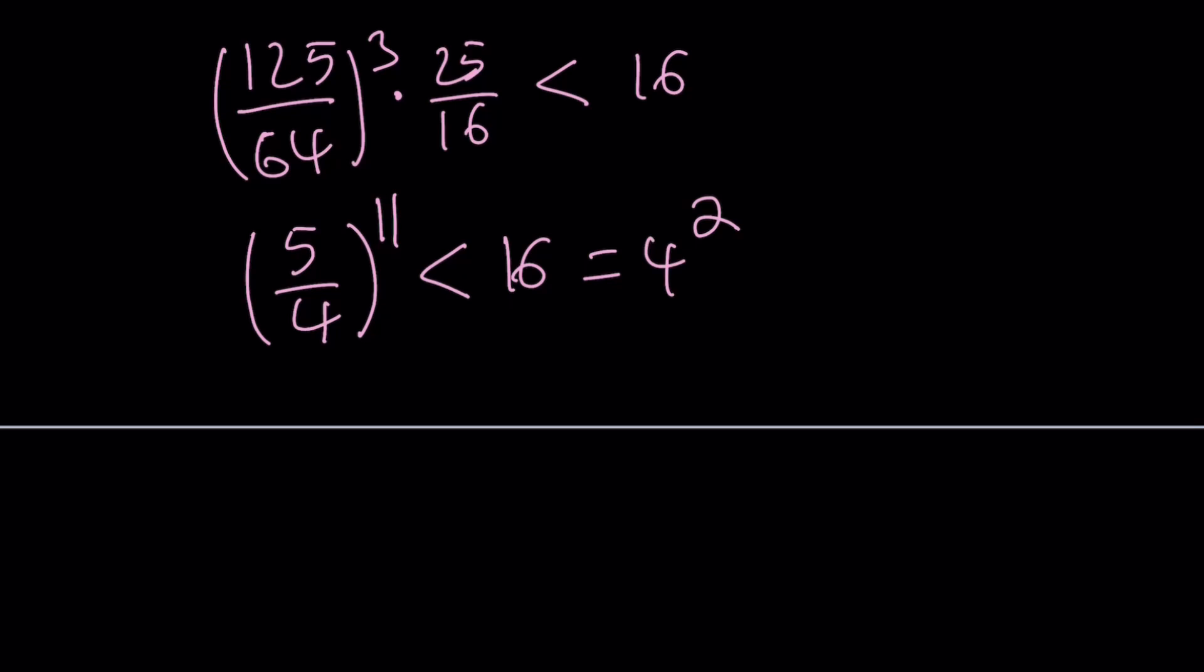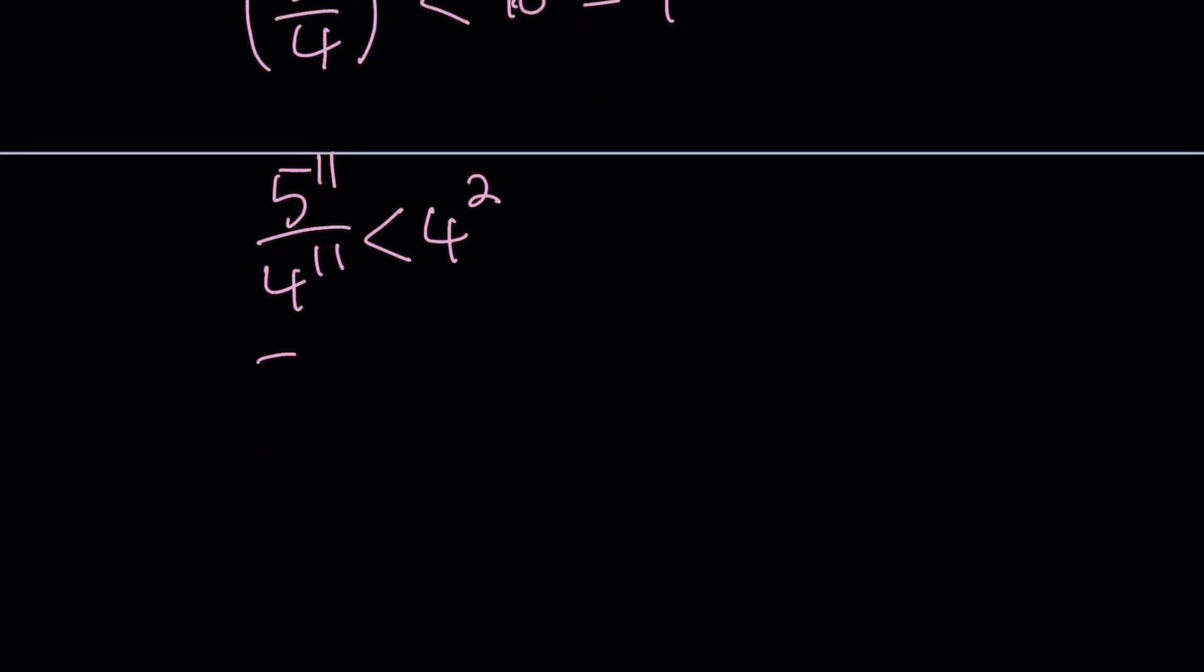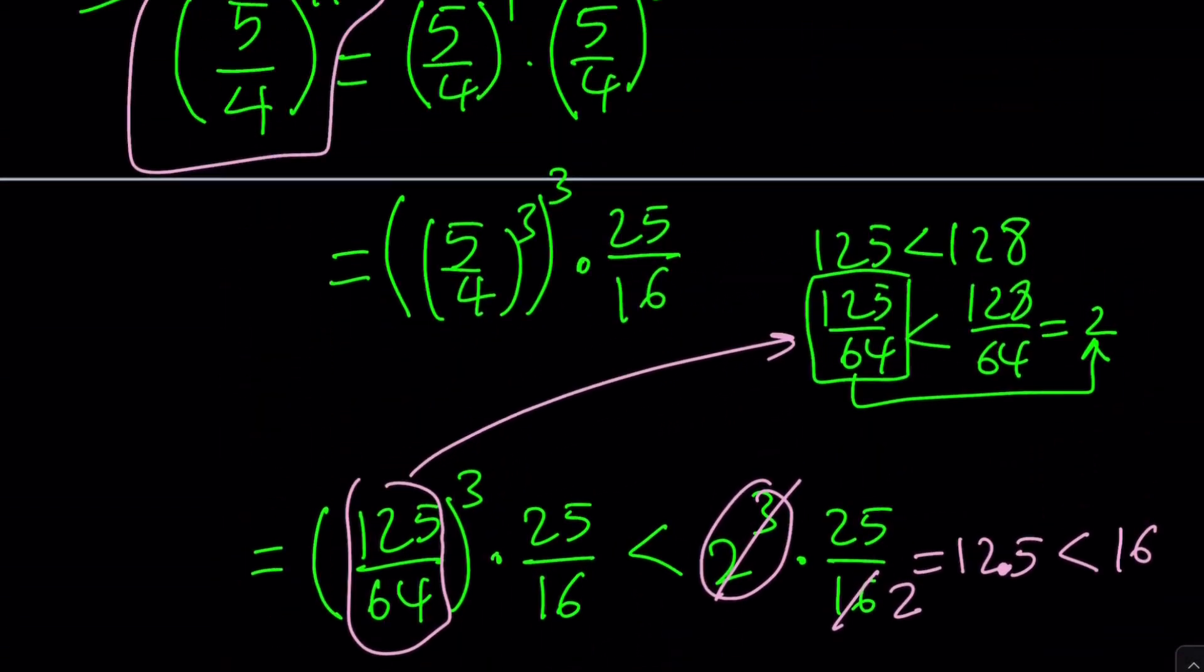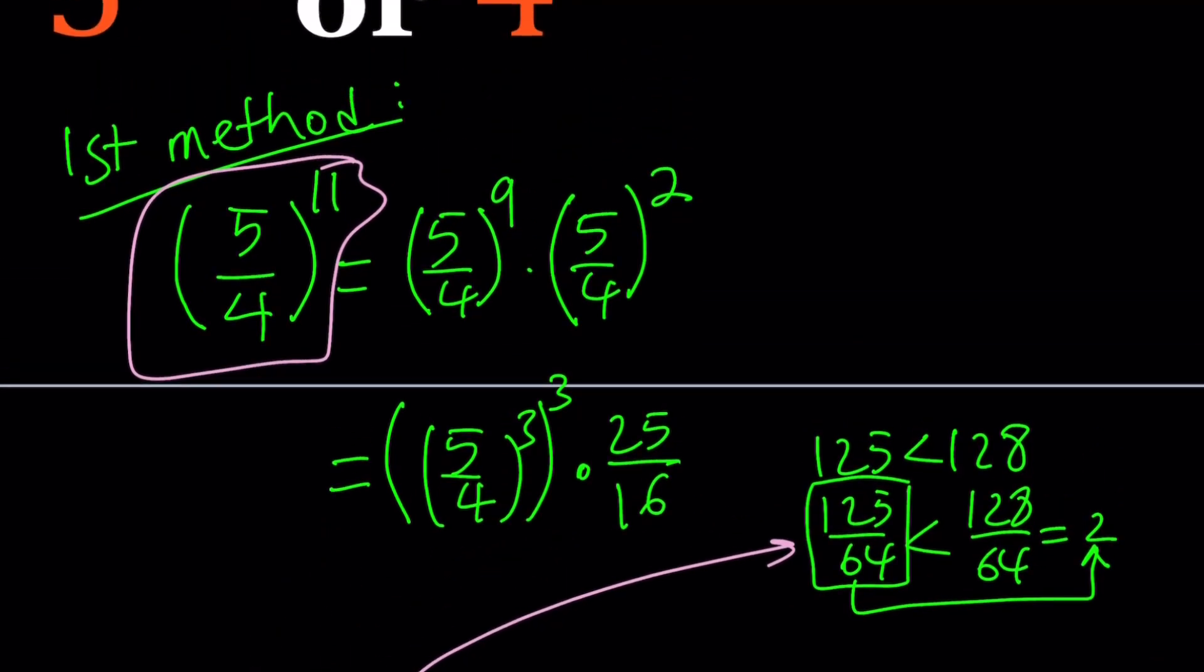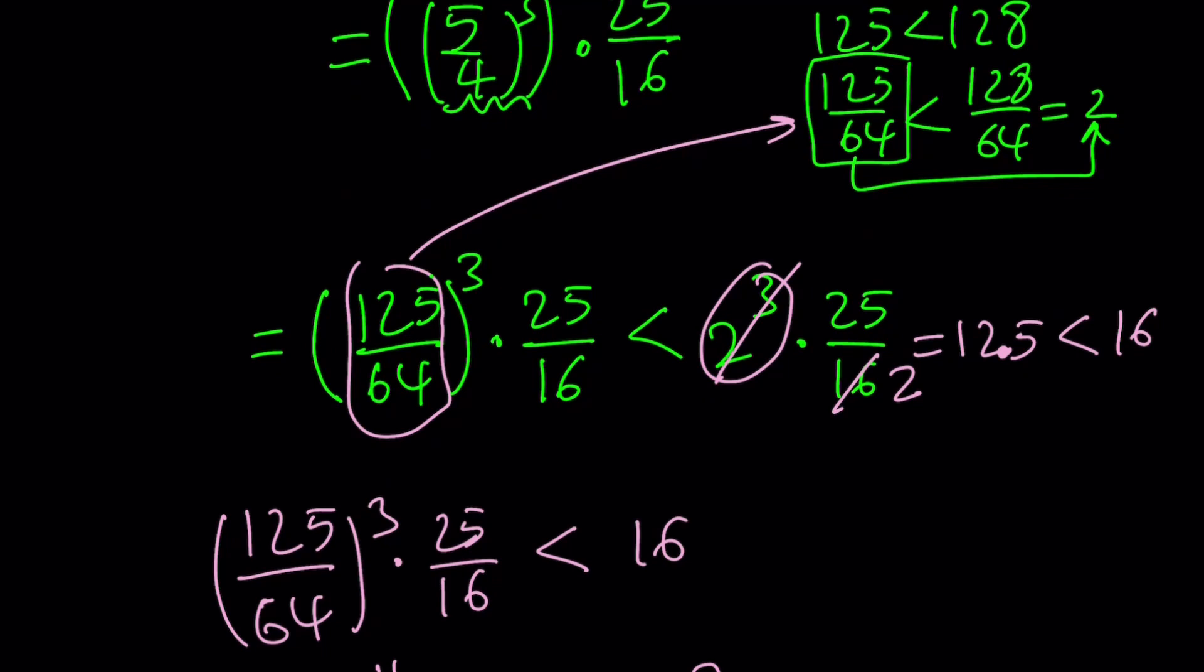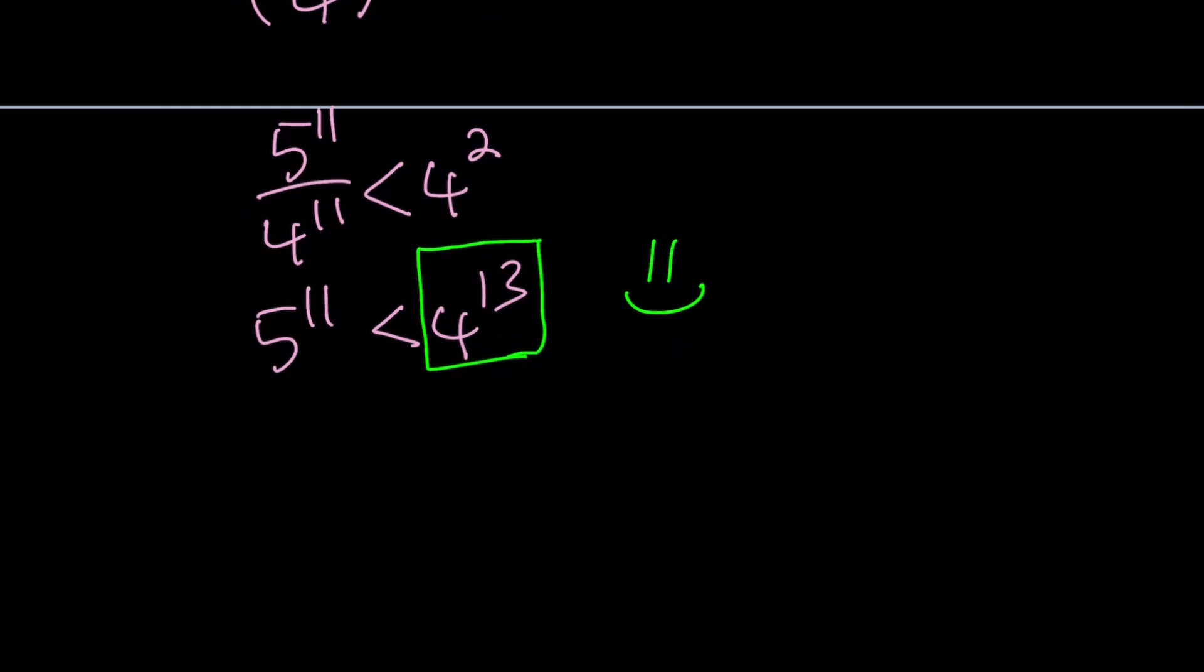This is 5 to the power 11 divided by 4 to the power 11 which is less than 4 squared. If you multiply both sides by 4 to the power 11, you get 5 to the power 11 is less than 4 to the power 13. And this means our winner is 4 to the power 13. That's the end of the first method.